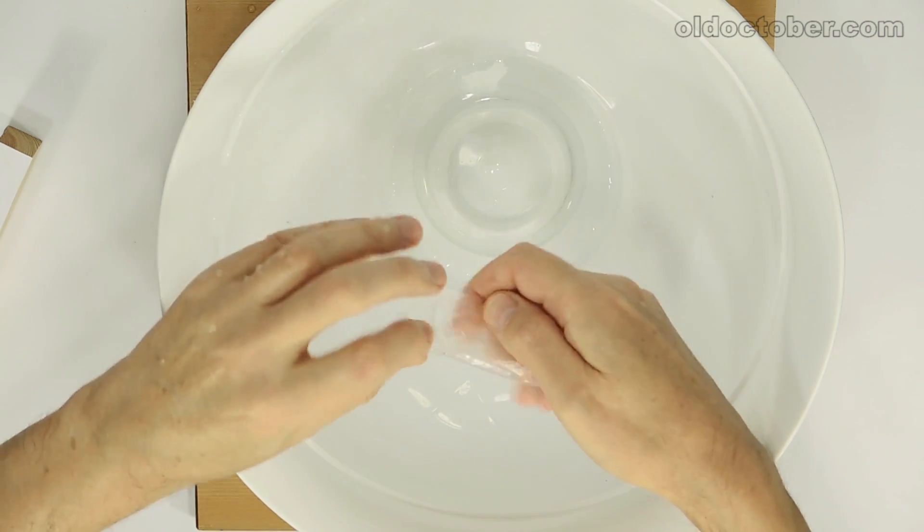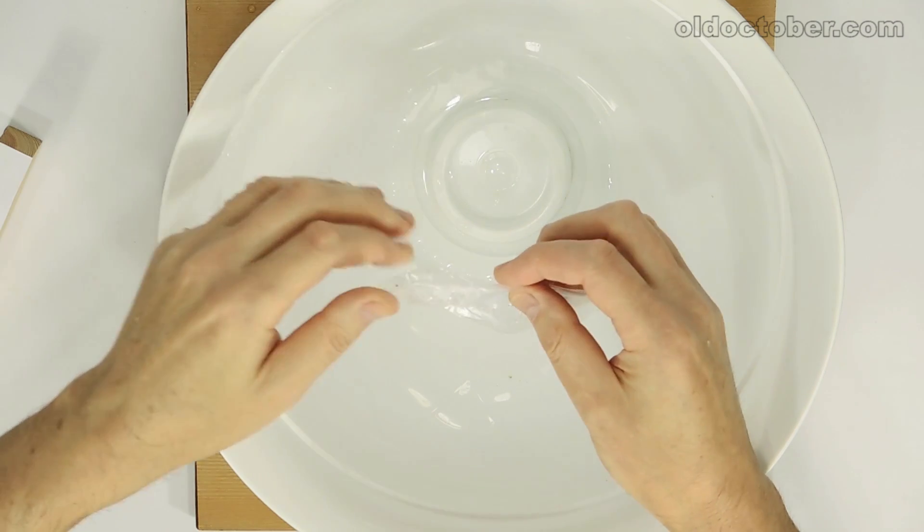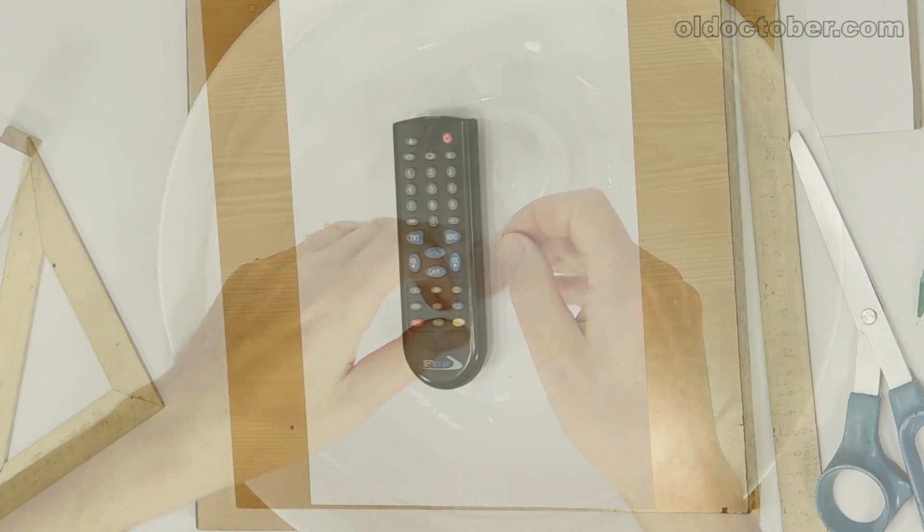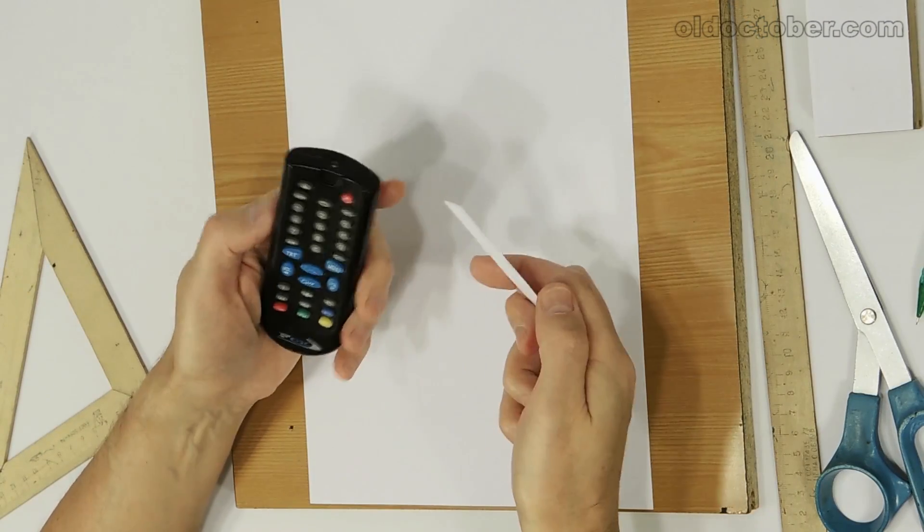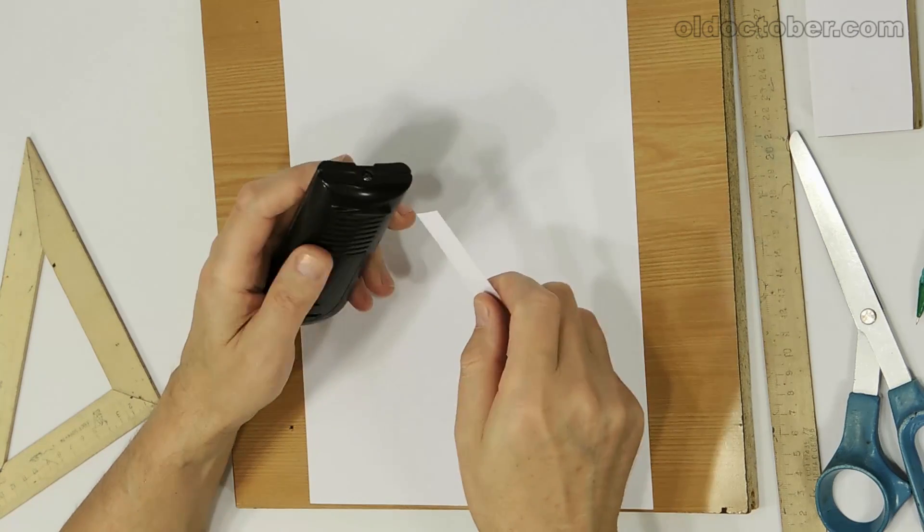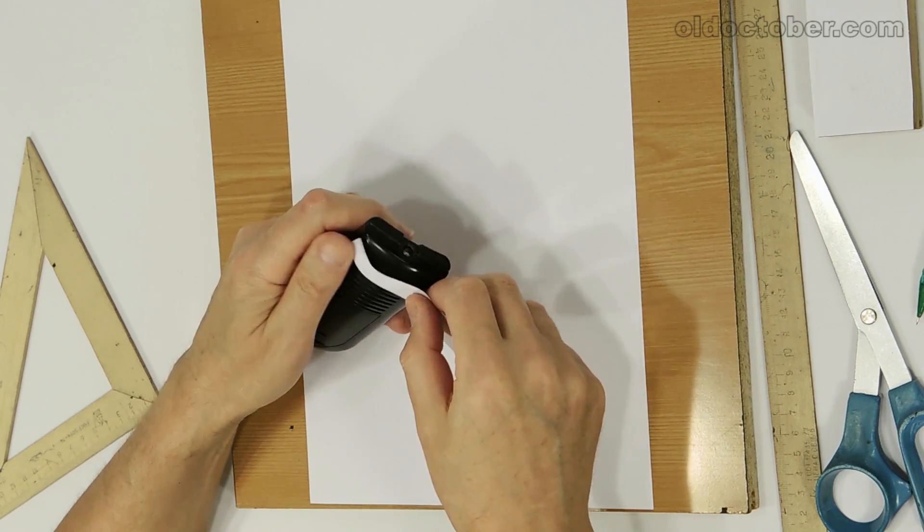We learned to do all types of welds. Now we can apply our abilities to other types of packaging. Let's protect the TV remote in the kitchen from pollution.